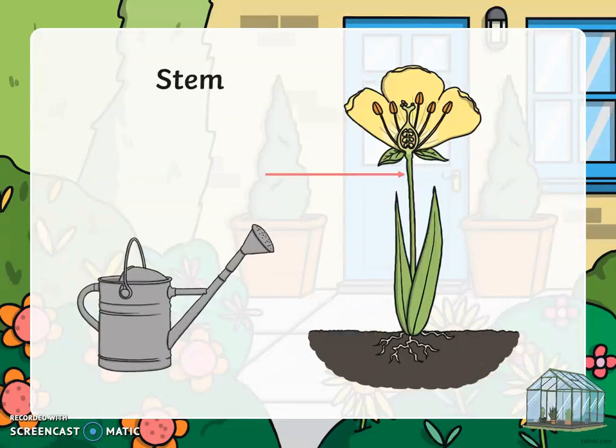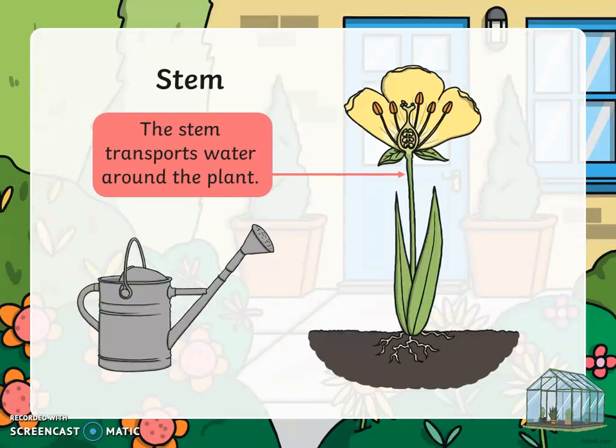And the last one is the stem. The stem transports water all around the plant.